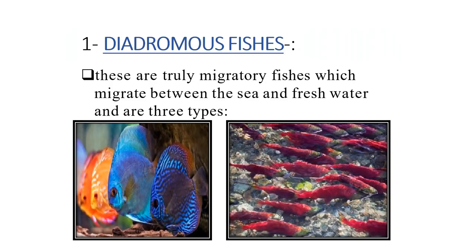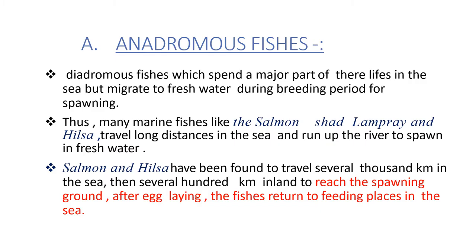So we were discussing about diadromous fishes. These fishes are truly migratory fishes which migrate between the sea and fresh water and are of three types. You can see the colourful diagrams given in my slide and now we come to anadromous fishes.